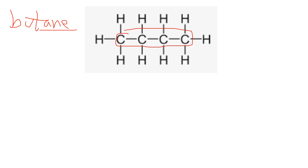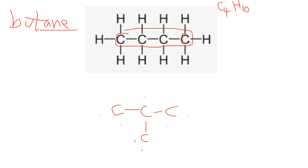Let's look at an isomer of butane — C4H10. Isomers are chemicals with the same molecular formula but a different arrangement. If we take one carbon and attach it in the middle, we get a branched structure. Counting all the hydrogens, they still add up to 10, so it's an isomer.